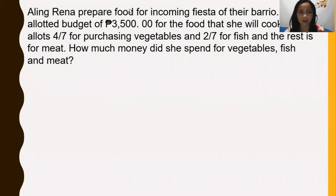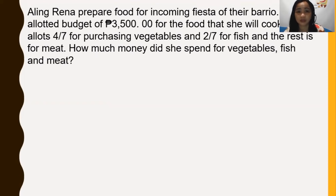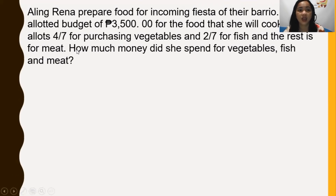We have here an example problem. This is based on the 5-4-A module. The problem: Alina Reina prepared food for the incoming fiesta of their barrio. She allotted a budget of P3,500 for the food that she will cook. She allots 4/7 for purchasing vegetables, and 2/7 for fish, and the rest is for meat. How much money did she spend for vegetables, fish, and meat?